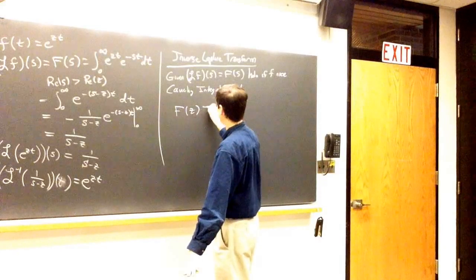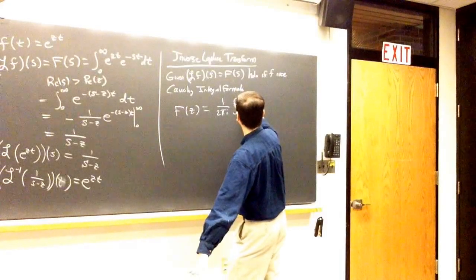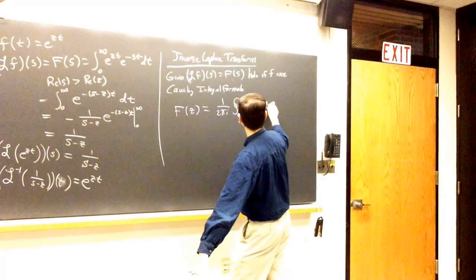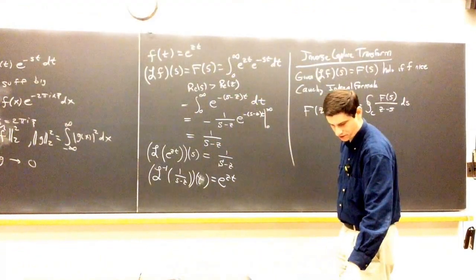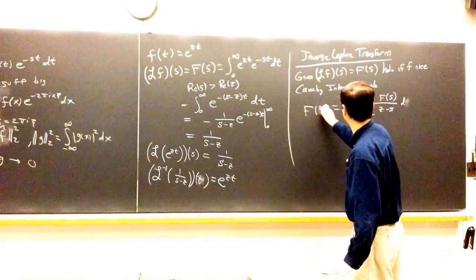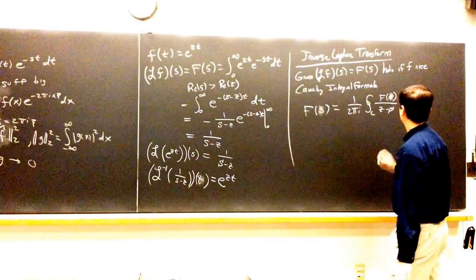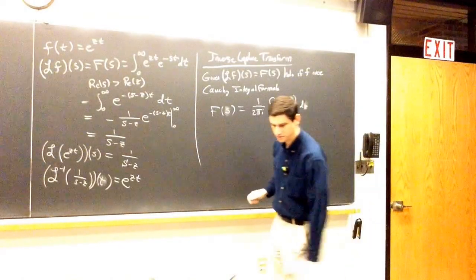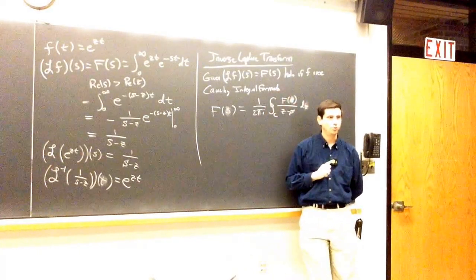So we can write F(z) = (1/2πi) ∫_C F(s)/(z − s) ds for some closed curve C. I want the variable s on the right side. Now I need to choose a good path. The normal Laplace transform is an integral along a line, so I probably want a line, moving things in such a way that I have a lot of decay.